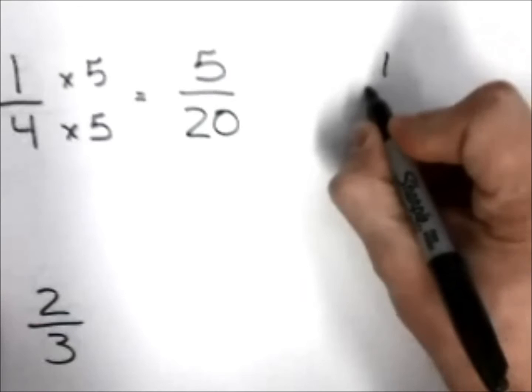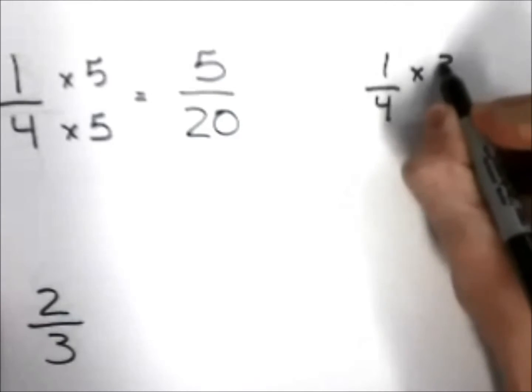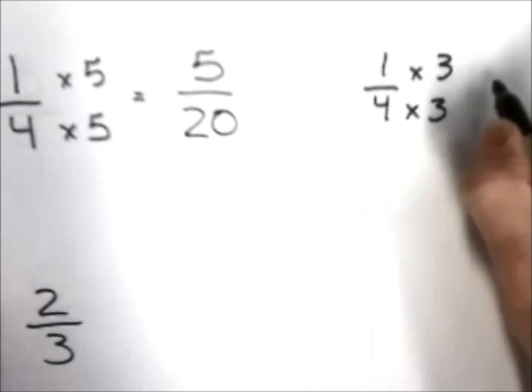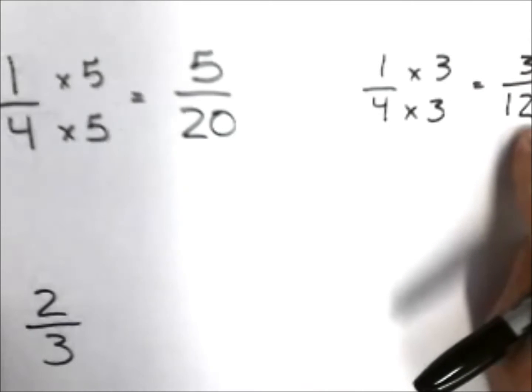Over here I'm going to take one-fourth and I'm going to use a multiplier of three. Same to the bottom as the top: one times three is three, four times three is twelve. One-fourth is the same as three-twelfths because we did the same to the bottom as the top.